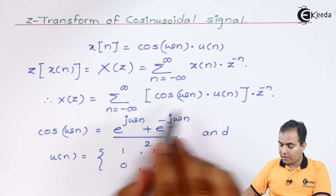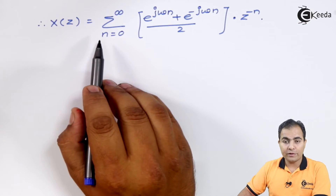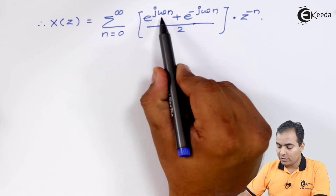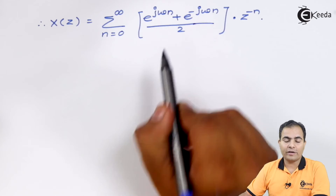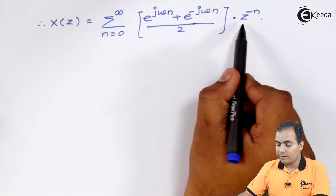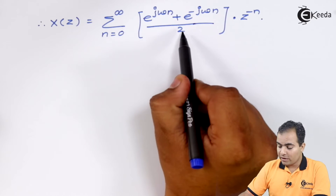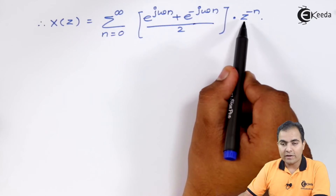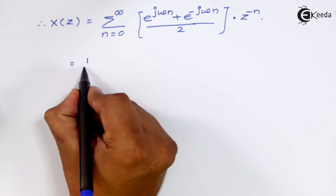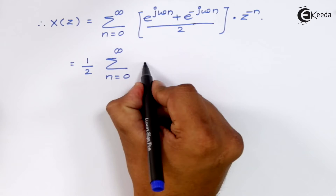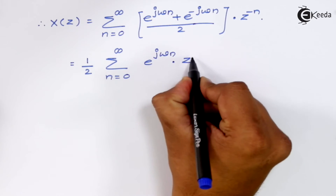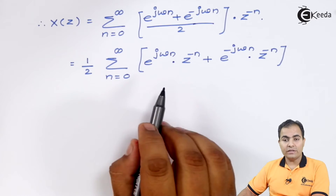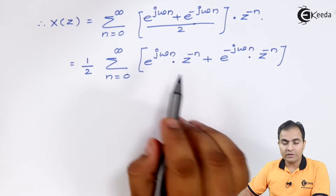I have substituted the u(n) summation varying from 0 to infinity, and substituted the cosine value as (e^(jωn) + e^(−jωn)) / 2, multiplied by z to the power of minus n. I am going to take one-half as a common constant factor, then multiply z to the power of minus n on both sides. Using the linearity property we can solve both parts separately.